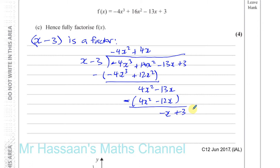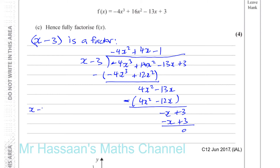Bring down the next number, which is 3. And hopefully, we know that x minus 3 is a factor. We should be left with exactly the same thing so that we know the remainder is 0. So minus x into x goes minus 1 time. Minus 1 times x is minus x, and minus 1 times minus 3 is plus 3. So we're left with a remainder of 0. So minus 4x squared plus 4x minus 1 is also a factor. So we've got x minus 3 times minus 4x squared plus 4x minus 1.